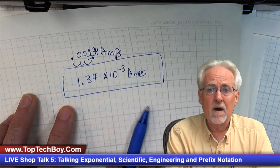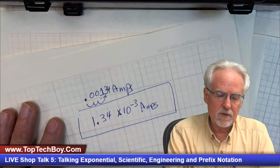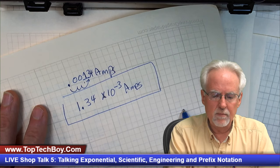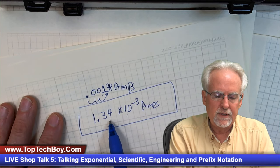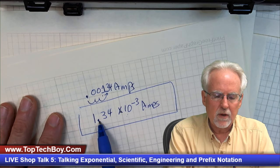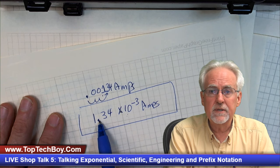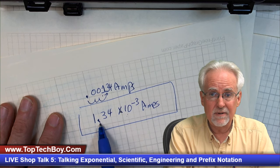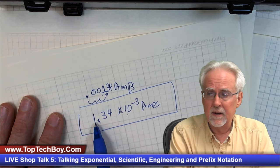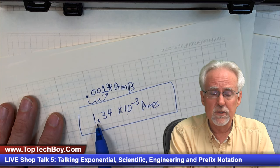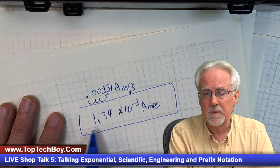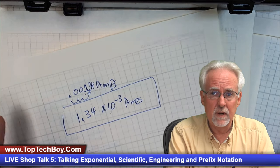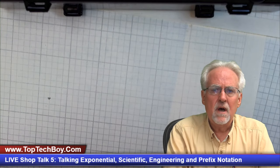That is exponential notation. The key on exponential notation is no matter what your number is, you want to move the decimal to the first place to the right of the first real number. The leading zeros are not real numbers.